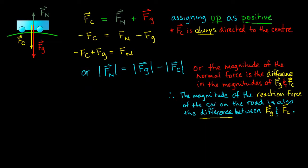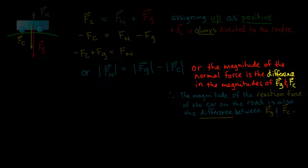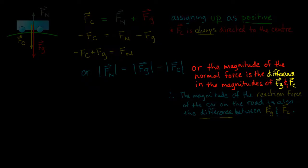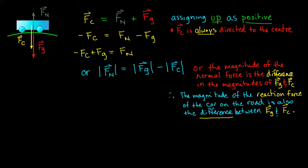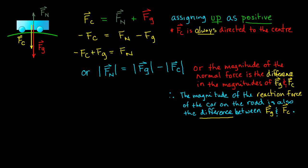Now the vector equivalent of that would be the magnitude of vector Fn or the magnitude of the normal force is equivalent to the magnitude of the gravitational force subtract the magnitude of the centripetal force. Or in other words the magnitude of the normal force is simply the difference in the magnitudes of the force of gravity and the centripetal force. Now that's going to be really important in the next part because our gravitational force and our centripetal force do not change in magnitude anyway from the top of the hill and bottom of the valley situation. In a nutshell I'm essentially saying that the magnitude of the reaction force of the car on the road is also simply the difference between Fg and Fc.